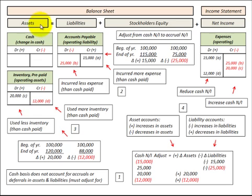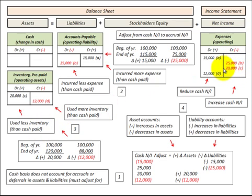Looking at assets — inventory or prepaid expenses. In the first case, we had a twenty thousand dollar increase in inventory, so we debit inventory for twenty thousand. This is where we used less inventory than the cash paid for it, so we credit expenses by twenty thousand, reducing them, which increases our cash net income.